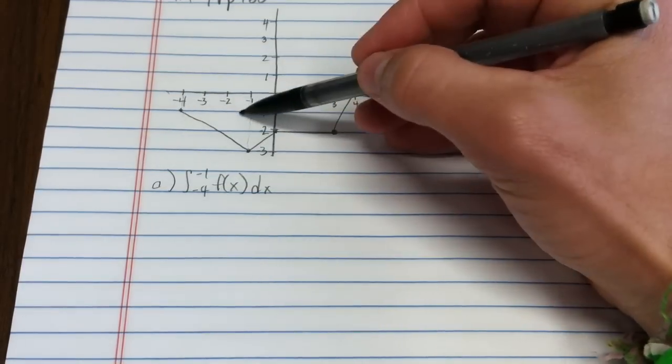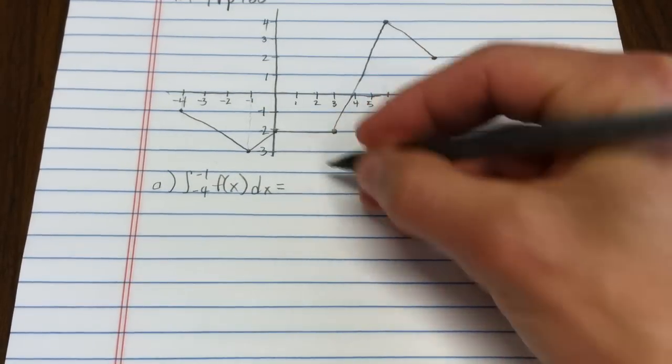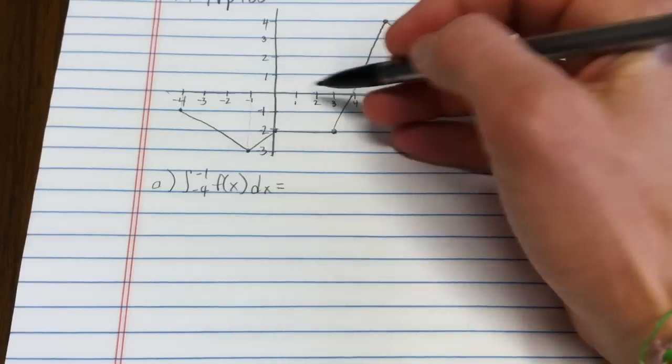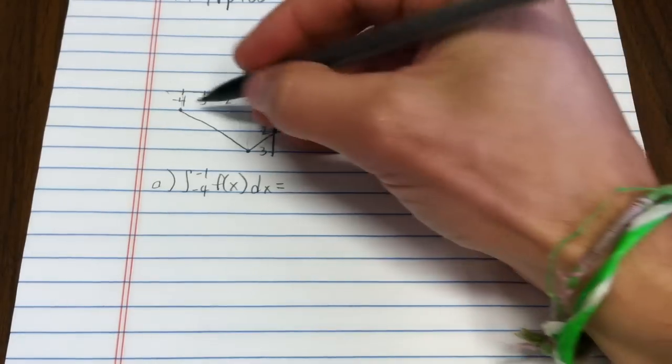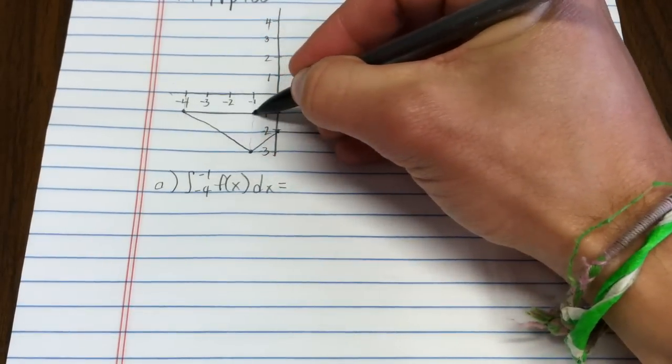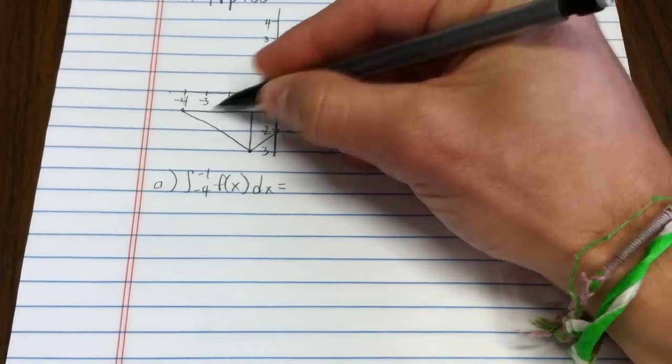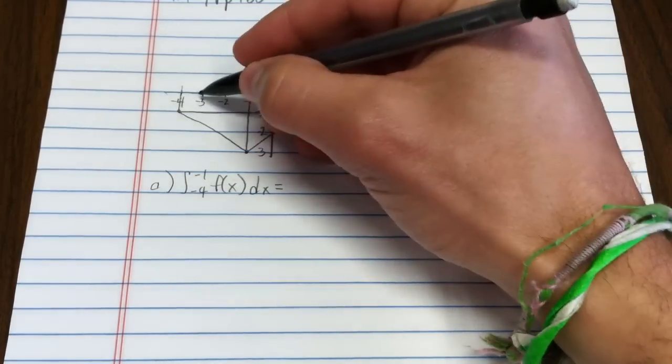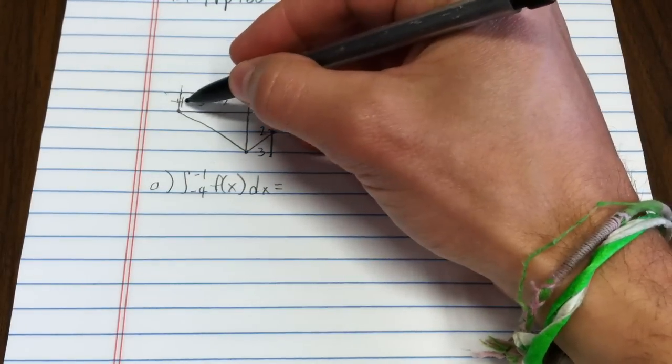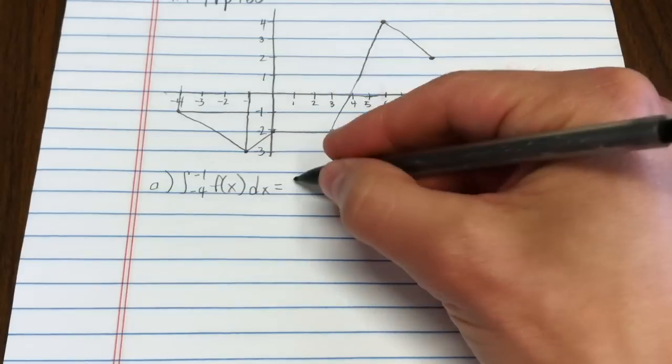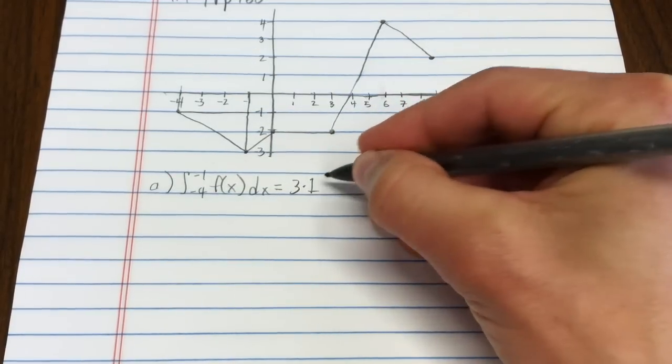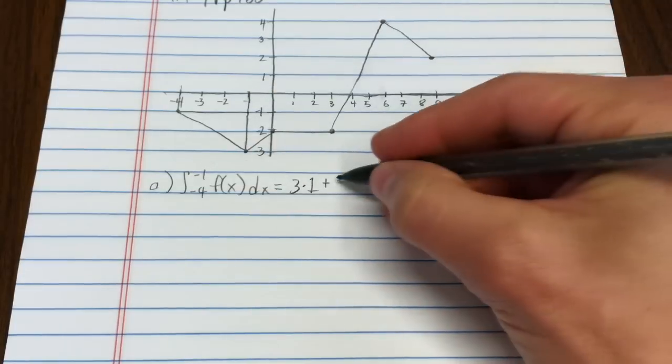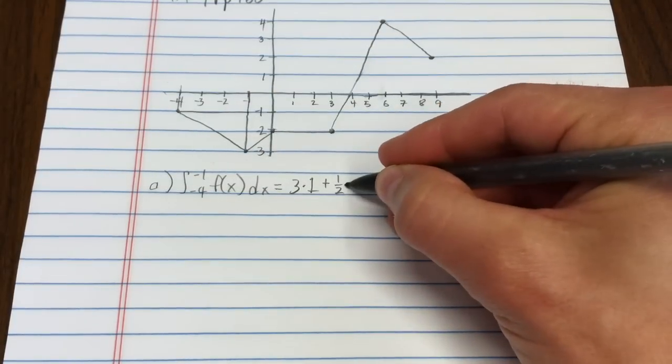This is a signed area, so we know this answer is going to be negative because it's below the axis. Now, this breaks pretty naturally into a triangle and a rectangle. The area of this rectangle can be determined by base 3 times height, which is 1.